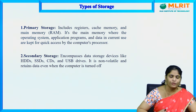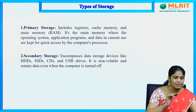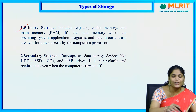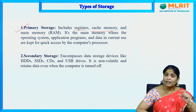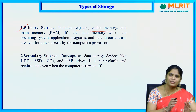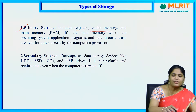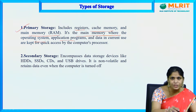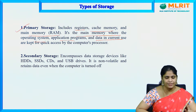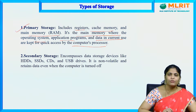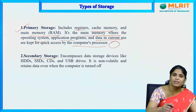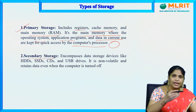We have discussed many types of storage mediums. Now, what are the types of storages? The first is primary storage, which includes registers, cache memory, and main memory (RAM). Primary storage is where the operating system, application programs, and data in current use are kept for quick access by the processor. Processing speed in primary storage is very fast, but storage capacity is low.